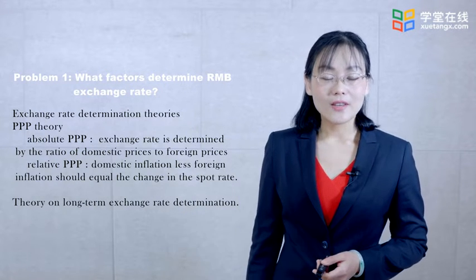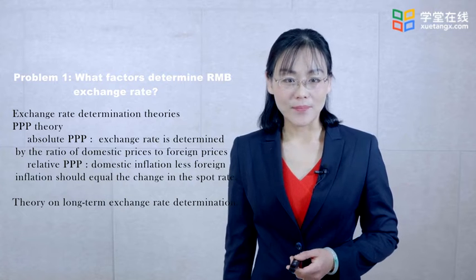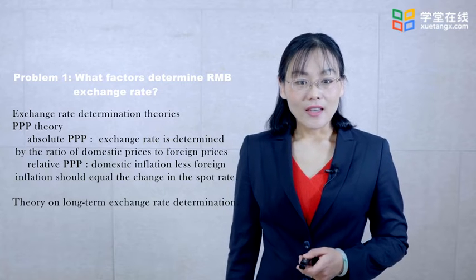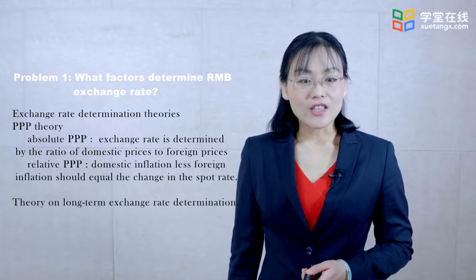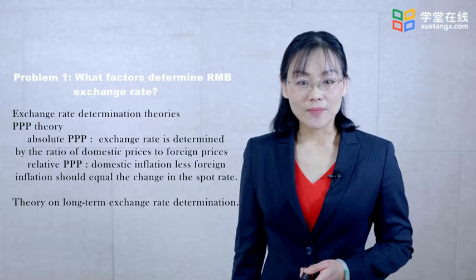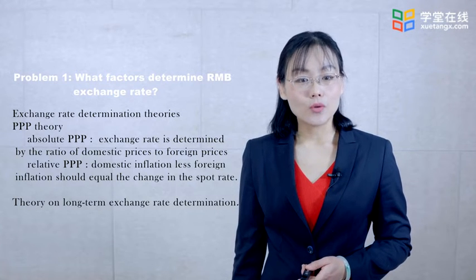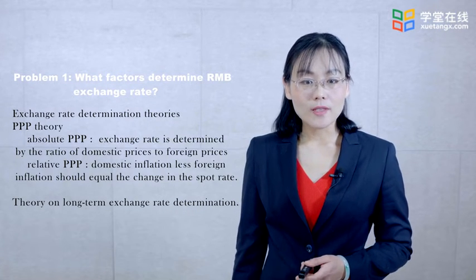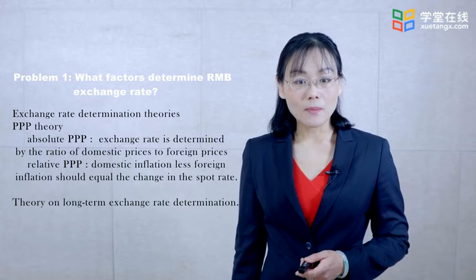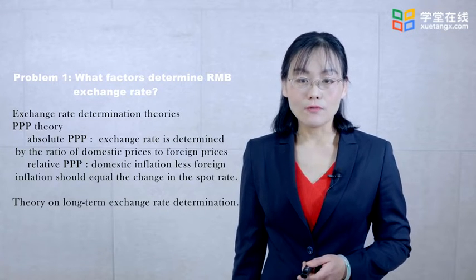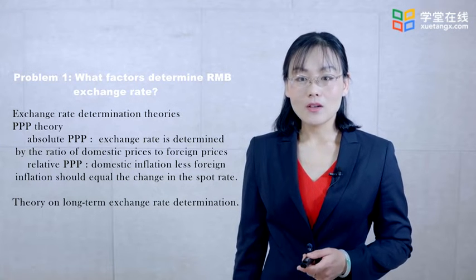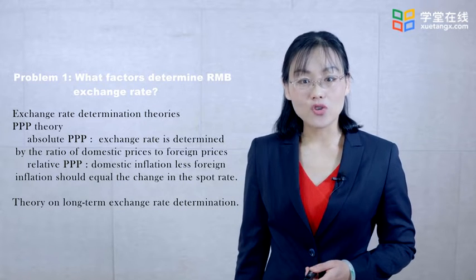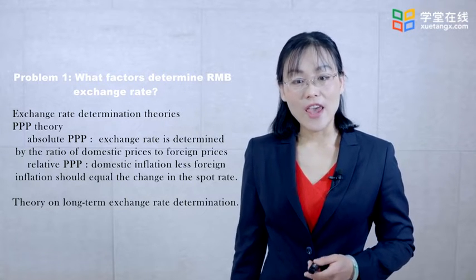The first theory is purchasing power parity, abbreviated as PPP. This theory is on long-run exchange rate determination. PPP theory has two versions: absolute PPP and relative PPP. The absolute PPP assumes that the exchange rate is determined by the ratio of domestic prices to foreign prices. The relative PPP theory assumes domestic inflation less foreign inflation should equal the change in the spot rate.